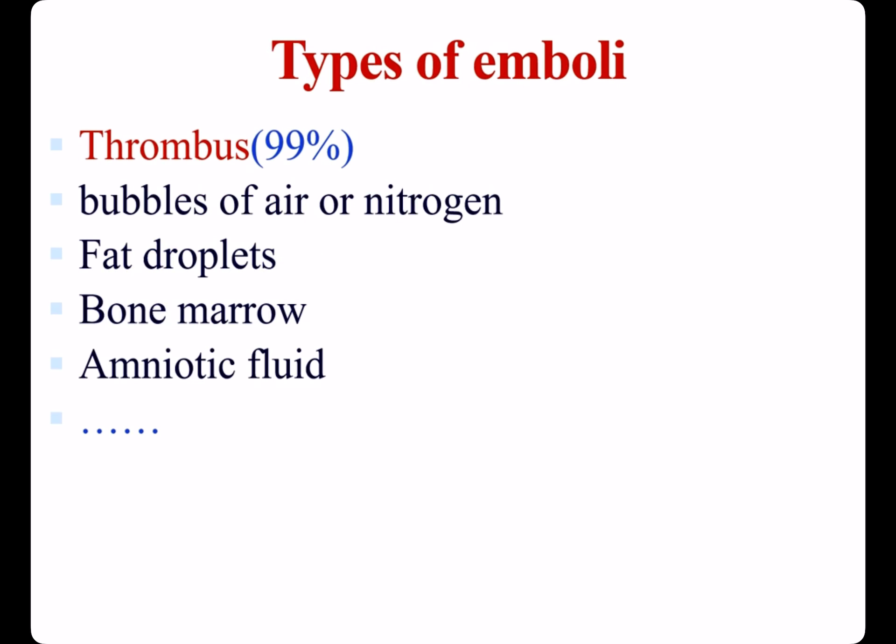Types of emboli include thrombus, accounting for 99%, fat droplets, bone marrow, atherosclerotic debris, bubbles of air or nitrogen, amniotic fluid, tumor fragments, foreign bodies such as bullets, and so on.